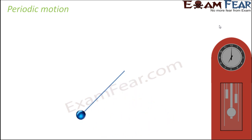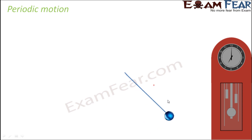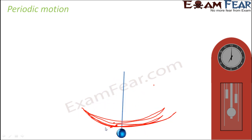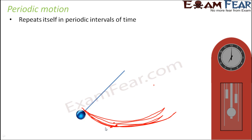Notice that the same type of motion is being repeated again and again. The ball-like structure comes here, goes there, comes back here — and again repeats the same thing. The same pattern of motion is being repeated in equal intervals of time, which is why this is called periodic motion. To complete one movement, it takes the same amount of time every single time.